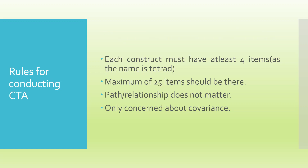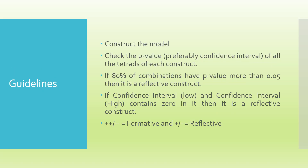There are some rules for conducting CTA. Each construct must have at least four items for CTA to run, with a maximum of 20 items. Path or relationship does not matter; CTA is only concerned about covariance. When running CTA, first construct the model and check the p-values of the tetrad for each construct. If 80% of the combinations have a p-value more than 0.05, it is a reflective construct. If the confidence interval — lower and upper — contains zero (i.e., spans from negative to positive), it is reflective. If both bounds are positive-positive or negative-negative, it is formative.